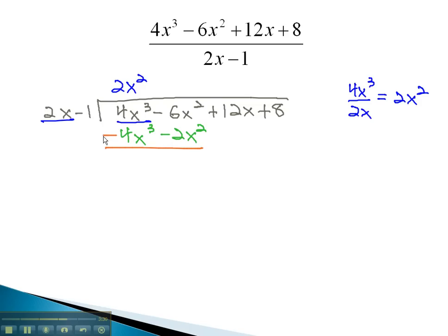Again, we change the signs, positive becoming negative and negative becoming positive, to combine, giving us negative 4x squared.